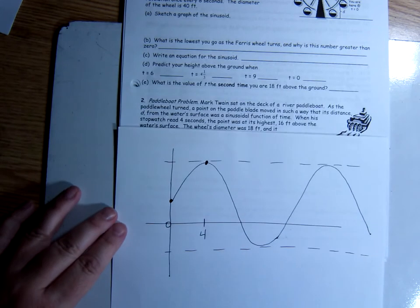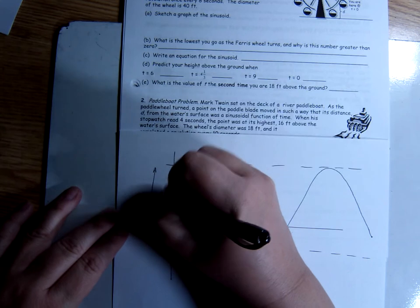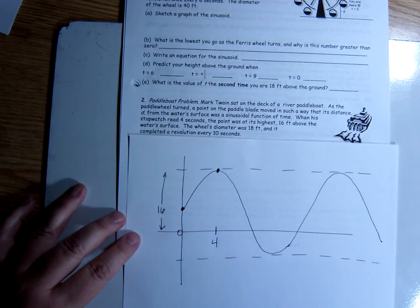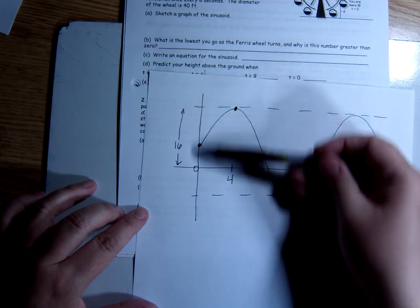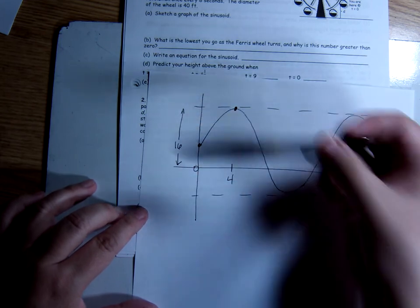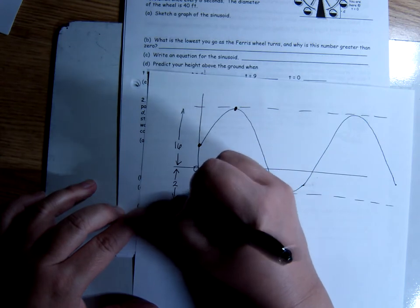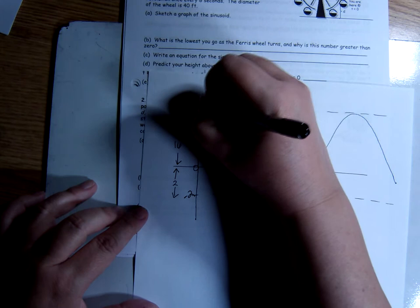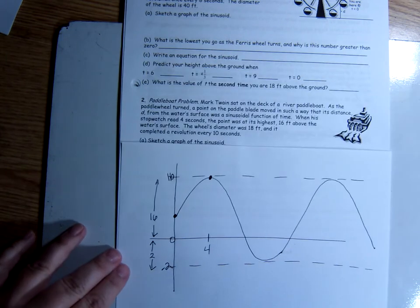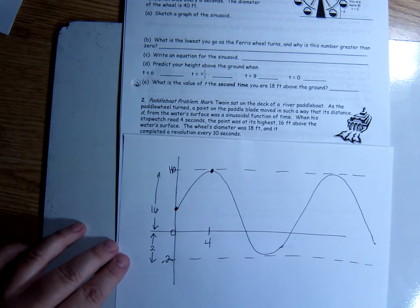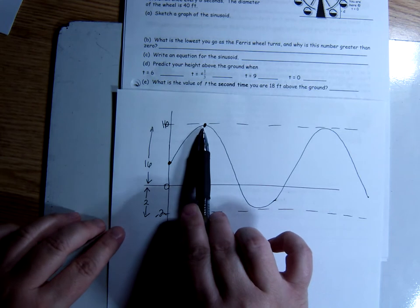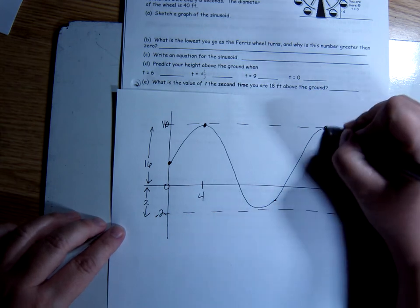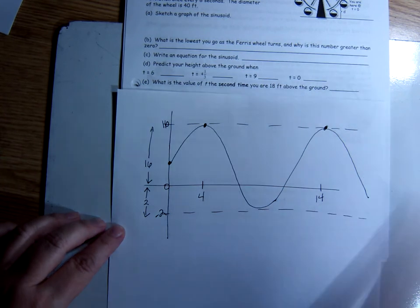16 feet above the water's surface. So from here to here is 16 feet. The wheel's diameter was 18 feet. Well, that means from top all the way to the bottom is 18 feet. So if this is 16 feet, then we have two feet below the surface of the water where the paddle dips underneath the water to push the boat forward. So this is negative two. This is positive 16. The wheel's diameter was 18 feet. We got that. And it completed a revolution every 10 seconds. So we know when it's at the top. And if it completes a revolution in 10 seconds, that means it goes all the way down through the water, all the way back up, and is at the top again 10 seconds later. So this must be 14 seconds after he pressed the timer.